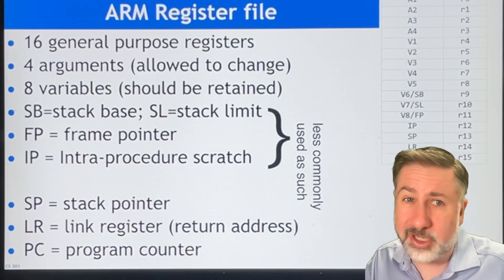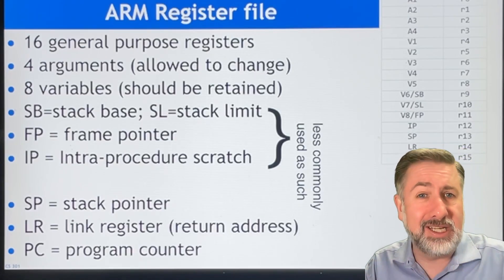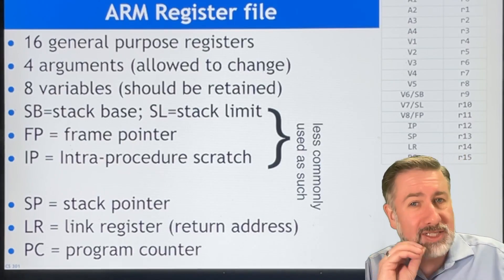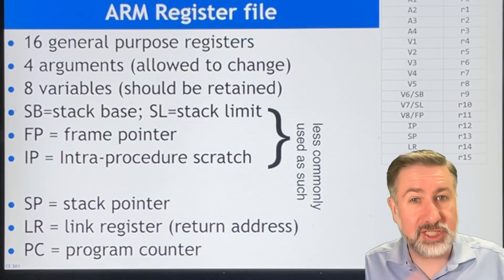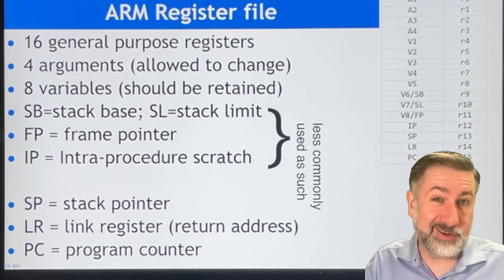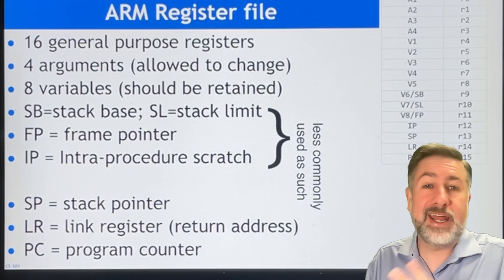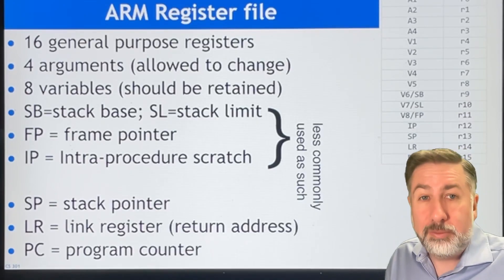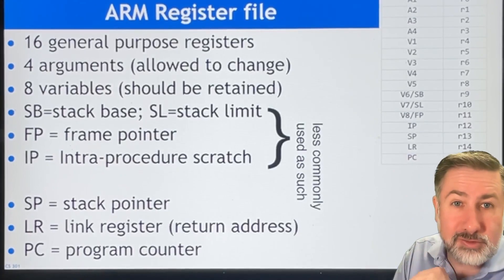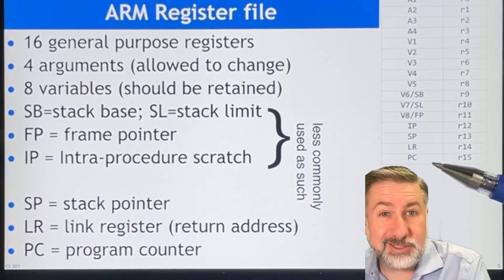ARM says we need lots of registers — not just four like x86 has. What ARM does is compromise between these two approaches and have 16 registers. 16 is a small number, but it means we only need 12 bits to specify two sources and a destination. There are other things we specify when we specify the operands for our instructions. All of the registers are in here — the program counter is one of these registers, which means we can mess around with the program counter if we want to.